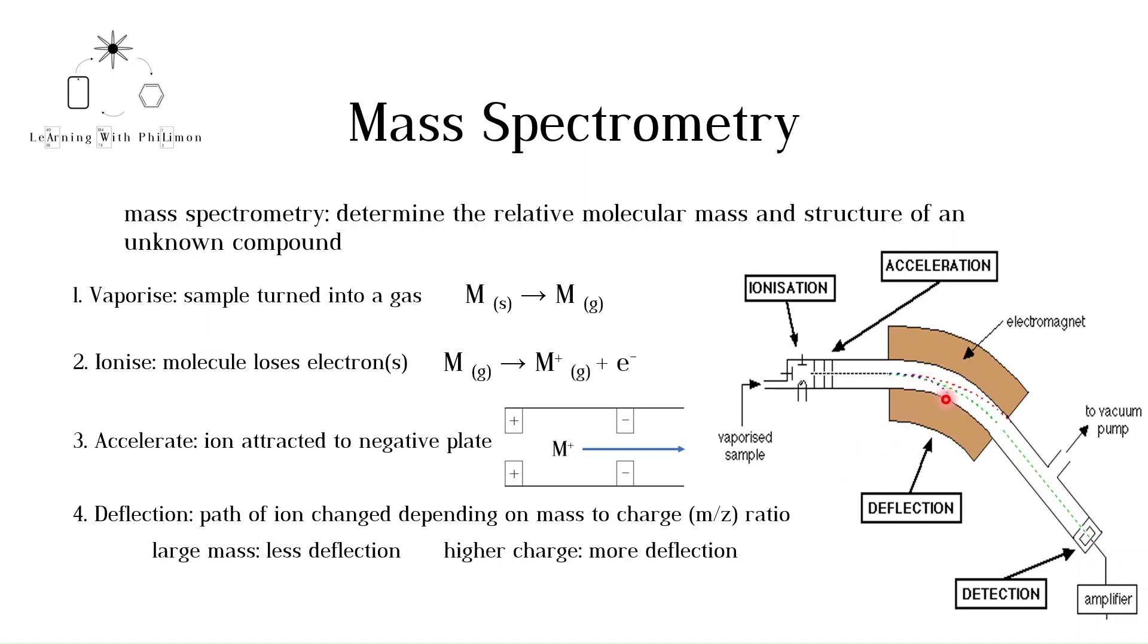The strength of the magnetic field can be varied, so that specific mass-to-charge ratios reach the detector. In this case, the green dotted line makes it all the way to the detector.